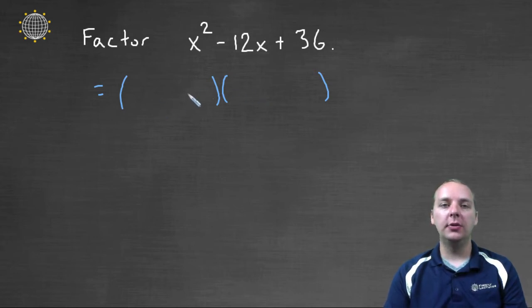I'm going to have two binomials that are going to FOIL to give me this quadratic. My F, or the first terms, are going to have to multiply to x², and that can only be x times x.